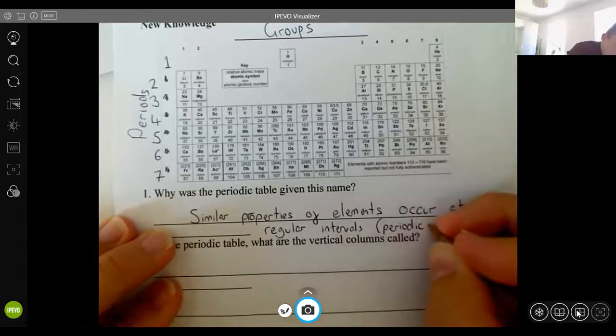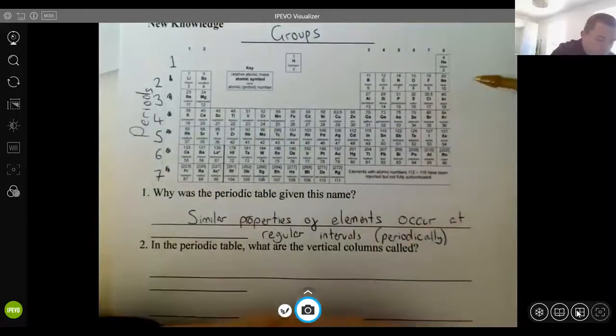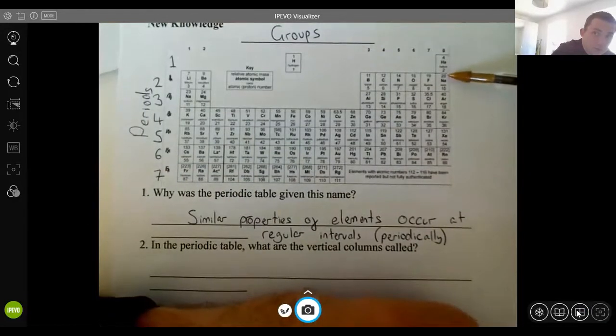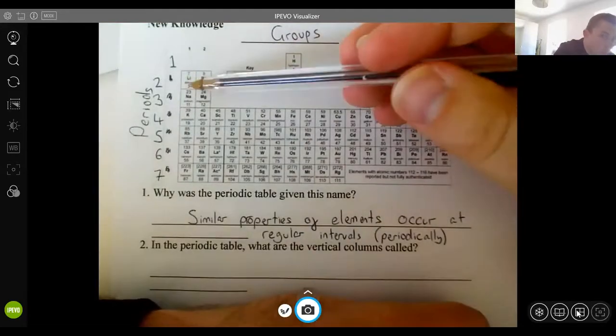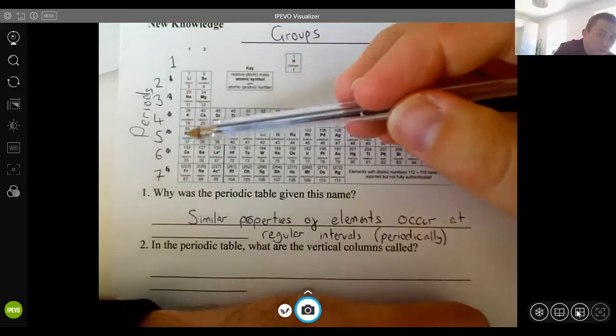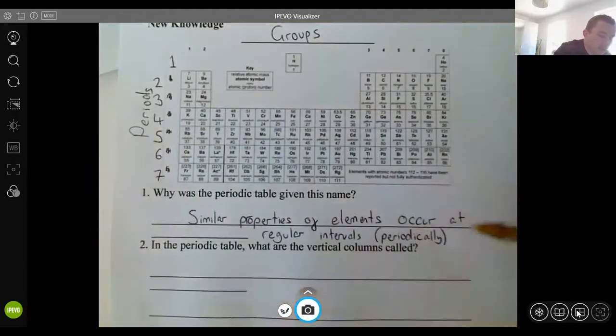So what I mean by that is if we look to examples here, group zero, these are all in group zero because they are all gases. Group one, they are all very reactive metals. So what I mean by Periodic Table is every regular interval, the properties will reappear. So let's look at it.